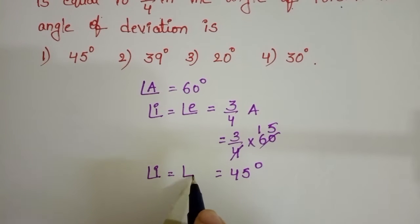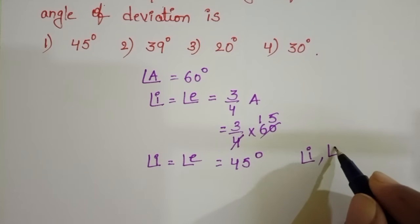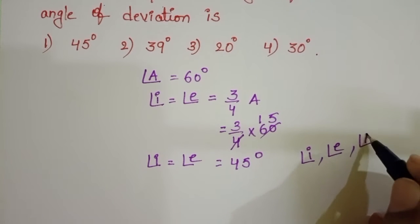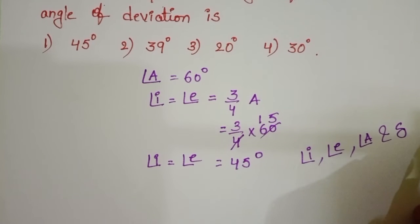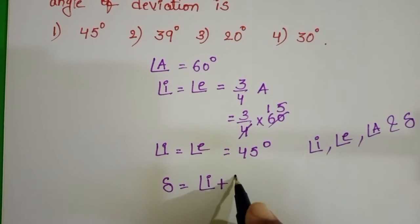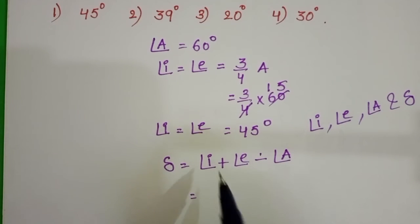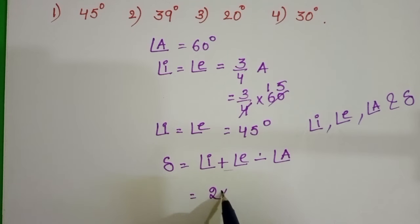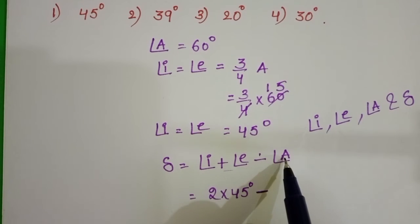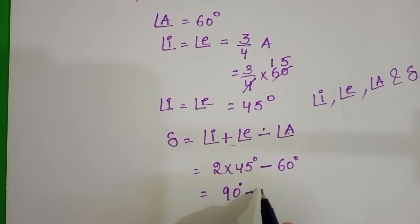So angle of incidence equals angle of emergence equals 45 degrees. The relation between angle of incidence, angle of emergence, angle of prism, and angle of deviation is: angle of deviation equals angle of incidence plus angle of emergence minus angle of prism. Since these two angles are the same, that gives 2 into 45 degrees minus 60 degrees, which equals 90 minus 60 = 30 degrees.